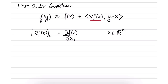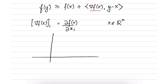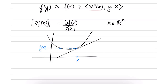Let us get some intuition for what the first order condition means. Consider a point x, where the function value is f(x), and draw the tangent of the function at that point. The first order condition specifies that the function is always above the tangent at any point.